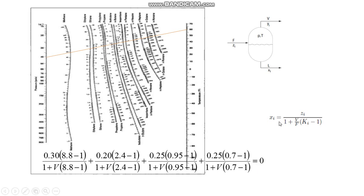Once you have got the value of V, what you need to do is again calculate X and Y by substituting the value of Z, K, and V into this equation for X1, X2, X3, X4, and then Y equal to KI into XI. So you can also get the value of Y.